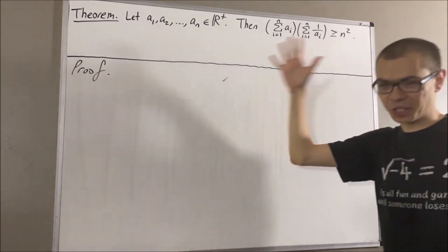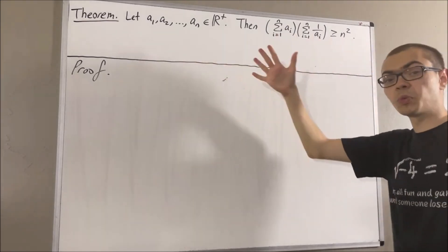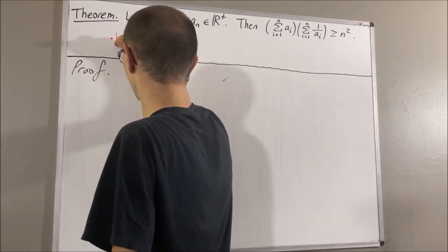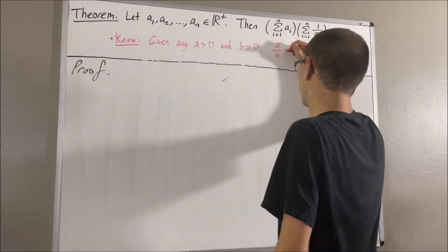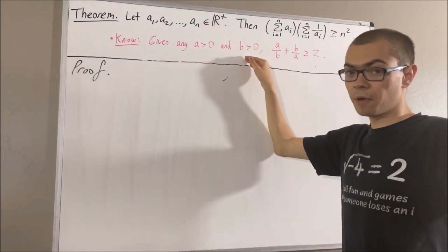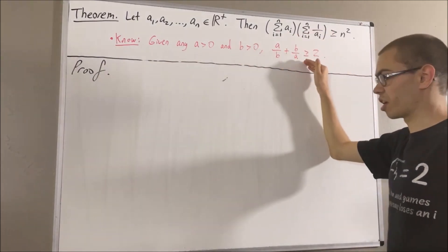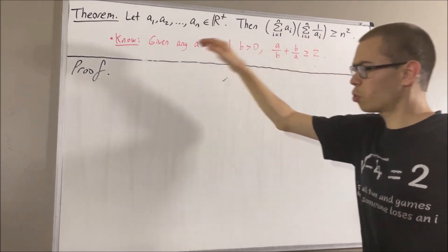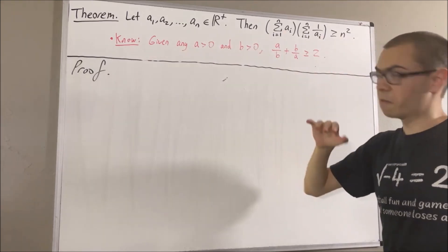This is going to be a good one. Now, in proving this theorem, we're going to use the following preliminary result. Given any two positive real numbers a and b, we have that a over b plus b over a is greater than or equal to 2. And we proved this in a previous video, which I'll link down in the description below.